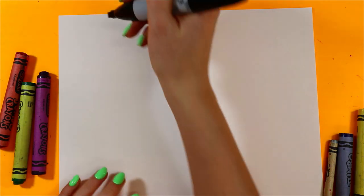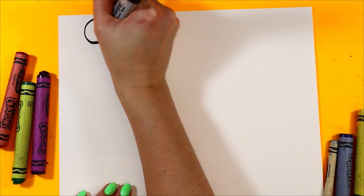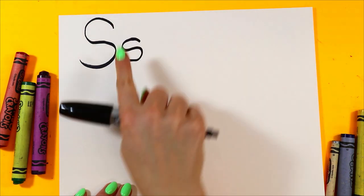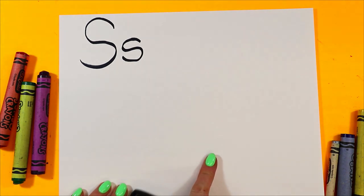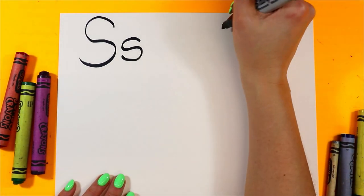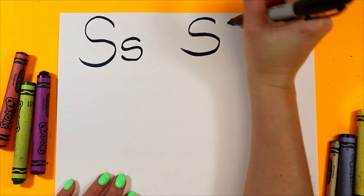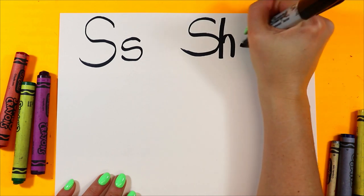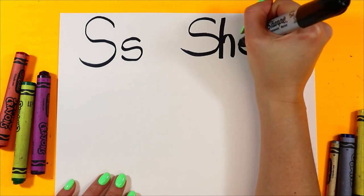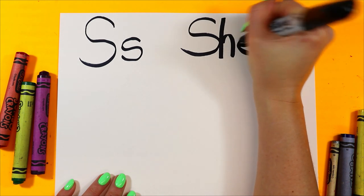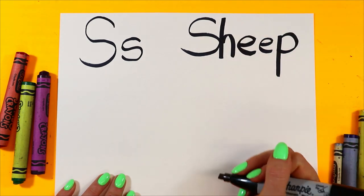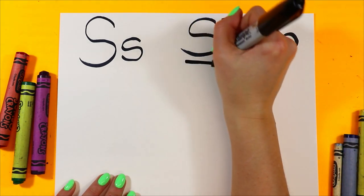Let's draw a sheep for the letter S. First we'll begin with the letter S — a nice big curving letter S for the uppercase S, and then one that's smaller for the lowercase, half the size of the big one. We're going to write the word sheep: S, H, E, E, P. Sheep. Sheep begins with the letter S.